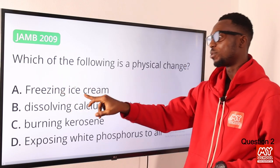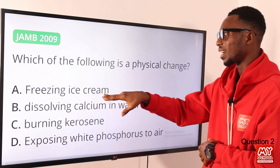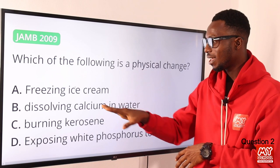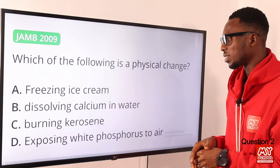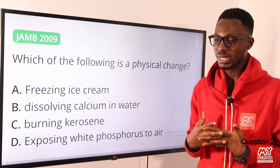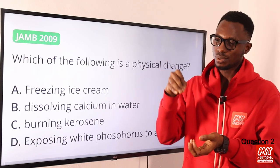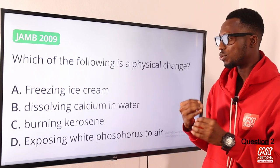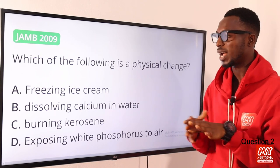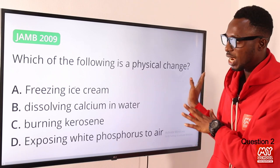Freezing ice cream is a physical change — it can also melt when you bring it out of the freezer. When you dissolve calcium in water, calcium reacts slowly with cold water; if you place some calcium metal in water, it will sink down, and after some time calcium hydroxide is formed, which is slightly insoluble in water. That is a chemical change.